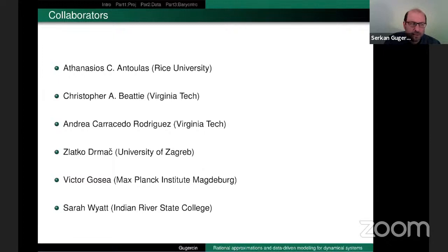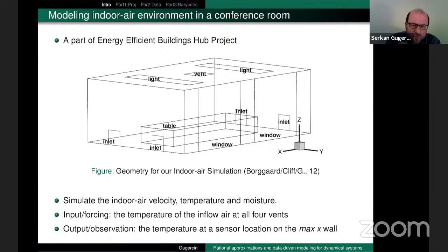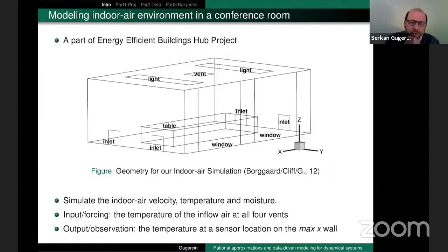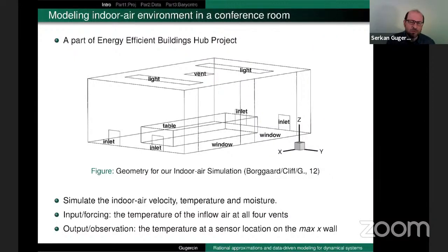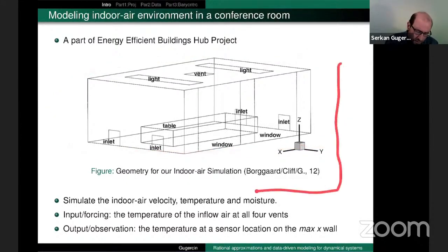Before getting to the gritty details of the mathematics, a basic illustration of where my models might be coming from. Around 2010 at Virginia Tech, we were involved in an energy-efficient building hub project from the Department of Energy to reduce energy consumption in buildings in the United States. Our goal was to do optimal control in this environment — you could call it a digital twin, though we didn't use that term then. This is our conference room.